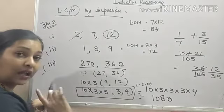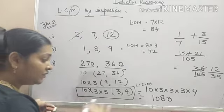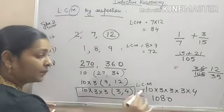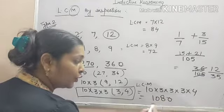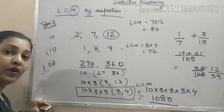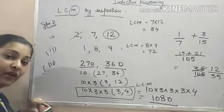3 and 4. 3 and 4 are co-prime. So, the LCM will be product of all these numbers. LCM will be 10 into 3 into 3 into 3 into 4. It will be 1080. This is our answer.